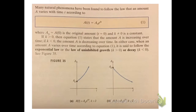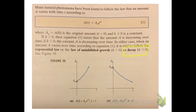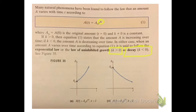For uninhibited growth, think of a positive interest rate increasing your money — if we have a positive k value, we're going to have growth in the substance. If we have decay, we'll have a negative k constant, and we'll have a decrease in the amount of whatever substance we're looking at. So: positive k means growth, negative k means decay.